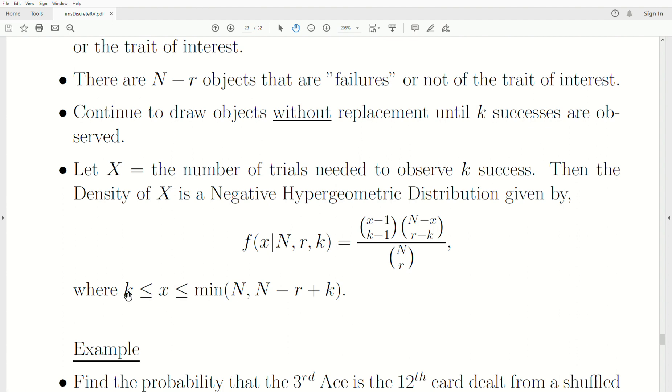The X has to be between k (you have to observe at least k objects to find k successes) and the minimum of this requirement. It really depends upon the number of successes in your population, the number of failures, are they small relative to how many successes you want to observe in your trial.